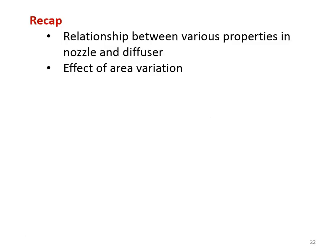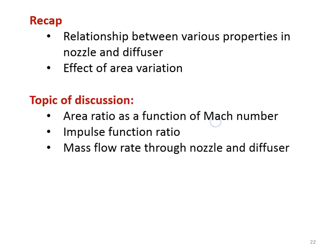In the earlier lecture, we discussed the relationship between various properties in the nozzle and diffuser, the effect of area variation. And we classified the flow passage as nozzle, diffuser, convergent-divergent nozzle, convergent nozzle, divergent nozzle, convergent diffuser, divergent diffuser, and divergent-convergent diffuser. We have classified the devices based on the Mach number and variation of properties. In this lecture, we will be discussing about area ratio as a function of Mach number, impulse function ratio, and mass flow rate through nozzle and diffuser.